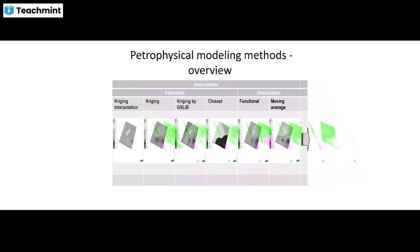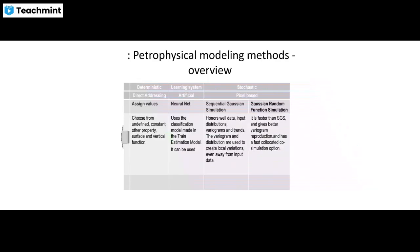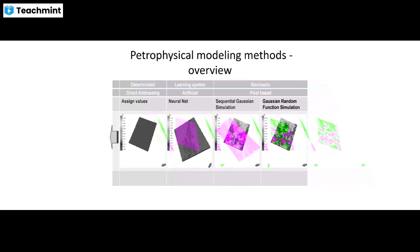The modeling overview shows kriging interpolation, kriging by GSLib, closest, functional, and moving average methods. The overall petrophysical modeling methods include deterministic, stochastic, direct, neural network-based, artificial, and pixel-based approaches. In the overview you can see assigning values, neural net classification models, train estimation models, Sequential Gaussian Simulation with well data, and GRFS which is faster than SGS.